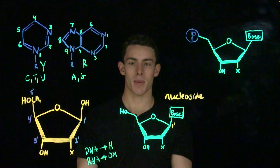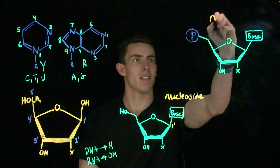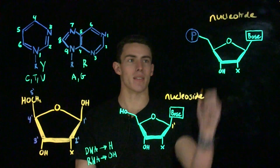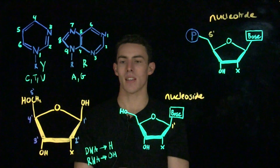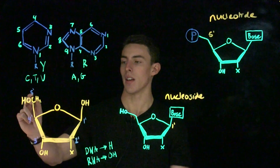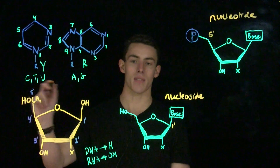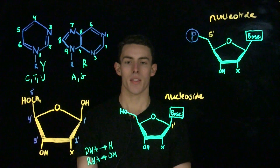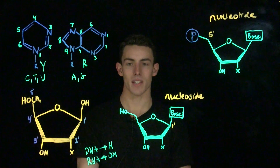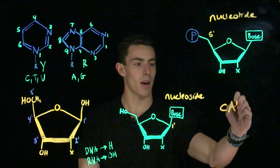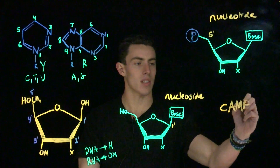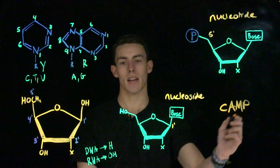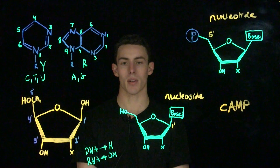A nucleotide is a nucleoside with a phosphorylated five-prime carbon. On the five-prime sugar of a nucleoside, a dehydration synthesis reaction occurs in which a phosphate group is added onto this carbon with the loss of water. The five-prime phosphate group can also react further in a cyclization reaction, such as in cyclic adenosine monophosphate (cyclic AMP), in which a single phosphate cyclizes with the three-prime hydroxyl group to make a cyclic shape. Cyclic AMP is an important regulatory and signaling molecule in the cell.